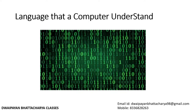Now here is another question — if we give the computer instructions, in what language does the computer understand? Should I communicate in Hindi, English, Bengali, Marathi, French, or Spanish? No — the computer only understands two things: zero and one. Zero means no current, one means current is flowing. Like a switch — off is zero, on is one. This is the most basic level of what a computer understands.